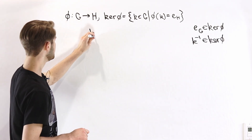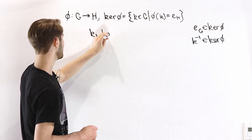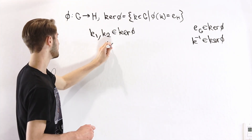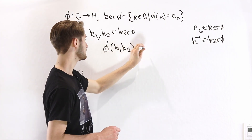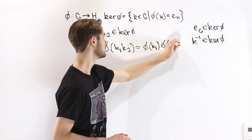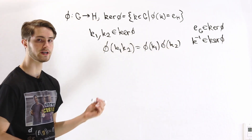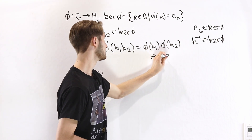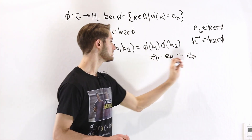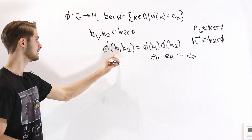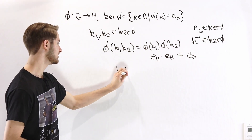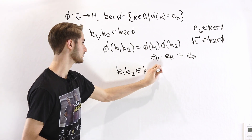Suppose we have two elements K1 and K2 in the kernel of phi. What is phi of K1 K2? We can split this into phi of K1 times phi of K2. Both are in the kernel, so this is the identity times the identity, which gives us the identity in H. Therefore phi of K1 K2 is the identity, which means K1 K2 is in the kernel of phi — the kernel is closed under multiplication.